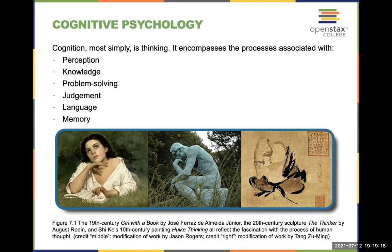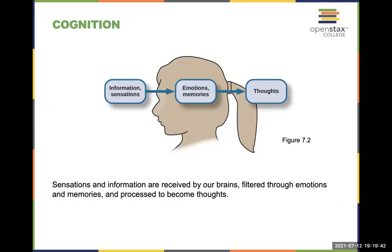So first, let's talk about what is cognition — thinking and cognition are synonymous. It encompasses the processes we associate with perception, knowledge, judgment, problem solving, language, and memory. We're constantly bombarded by information and sensation, and when our brains receive that, it's filtered through our emotions and memories and eventually becomes our thoughts. Cognition is also central to cognitive behavioral therapy — thoughts, feelings, and behaviors are all interconnected.